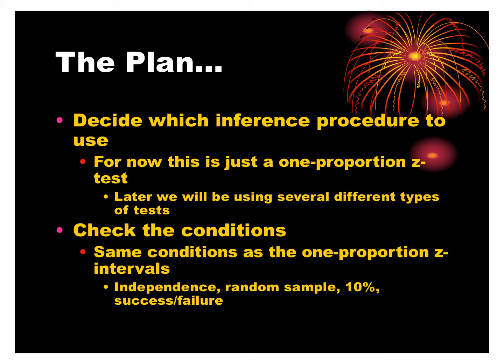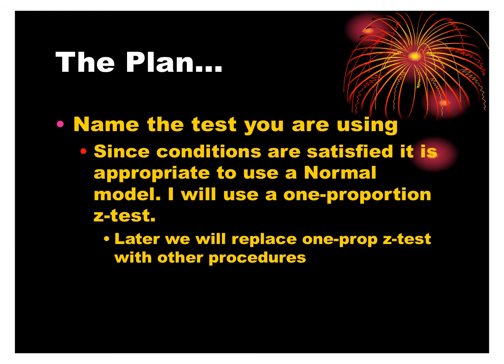Our conditions are the same as those in Chapter 19. We have to name the test we're using — that's why we got into the habit of saying, 'Since conditions are met, it is appropriate to use a normal model.' Now we say, 'I will use a one-proportion z-test,' instead of a z-interval. Later, we'll replace that with whichever test applies.